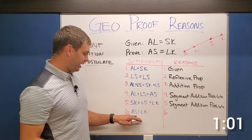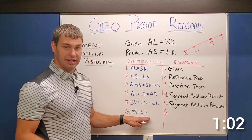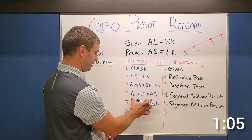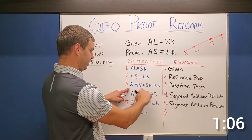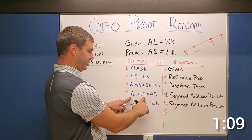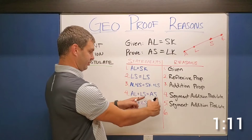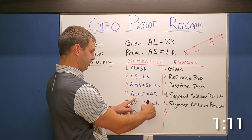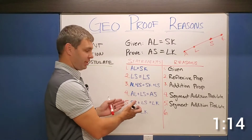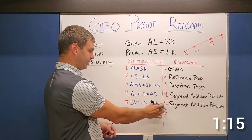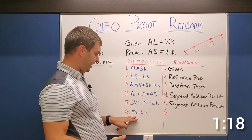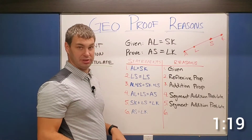Similarly, SK plus LS equals LK — part plus part equals the whole — again, segment addition. And then lastly we can prove that AS equals LK by substitution, because up here in this line those two things equal each other. Since now I know that the first part equals AS and the second part equals LK, if they equal each other and they both equal AS and LK, obviously by substitution AS equals LK.